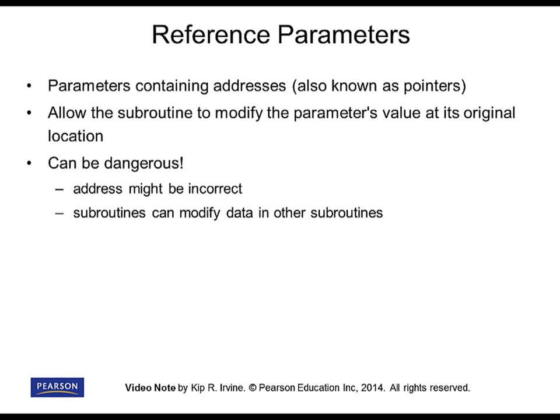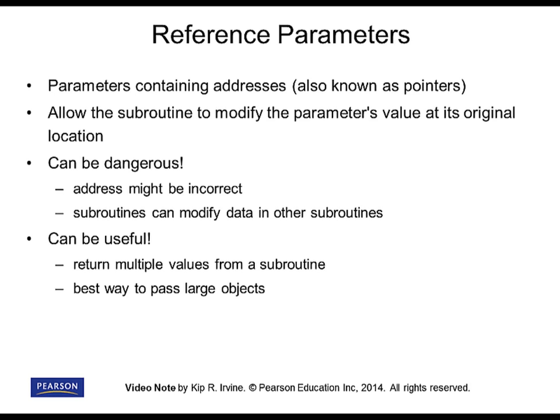It could be dangerous because the address could be incorrect, so you might be passing an invalid pointer. The subroutine could cause the program to halt because it accesses an invalid memory location. From a data encapsulation point of view, it's a little dangerous to have subroutines that can modify data in other subroutines. But it can be useful because it allows you to return multiple values from a subroutine — normally a function returns only one value, but when you have more than one to return you can pass addresses of variables, and the subroutine can modify those variables as a way of returning data.